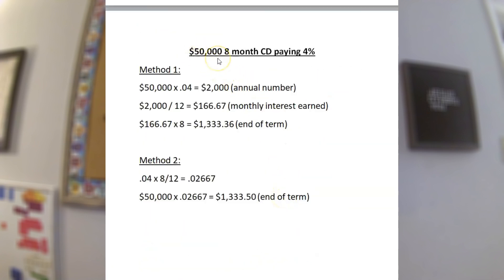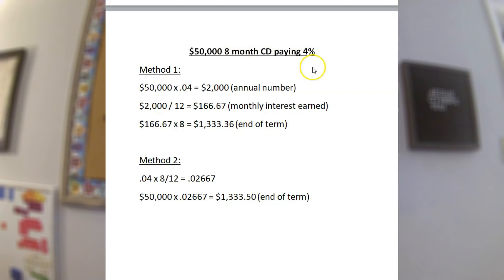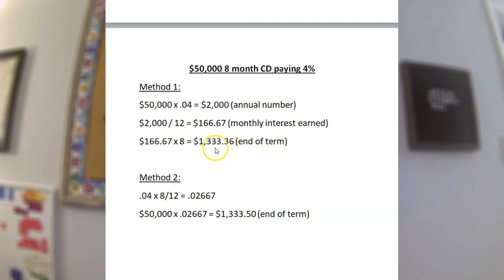Now let's look at example two: a $50,000 CD that is an eight-month term paying 4% APY. Using the first method, take $50,000 times 0.04, which gives you $2,000 — the annual number. But again, this is an eight-month CD, not annual, so we determine the monthly payment: $2,000 divided by 12 equals $166.67 per month. Multiply that by eight months, which gives you $1,333.36. That is the interest you'll have at the end of your CD term.